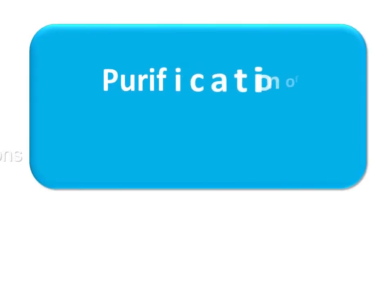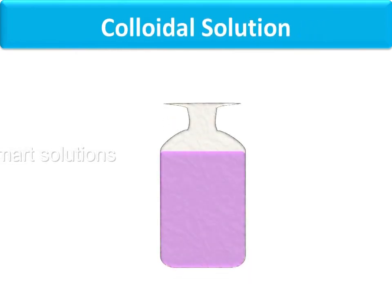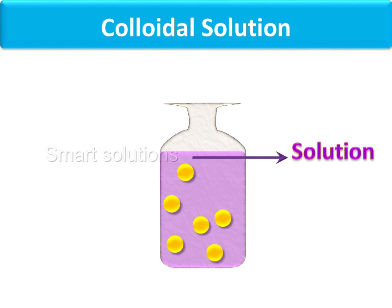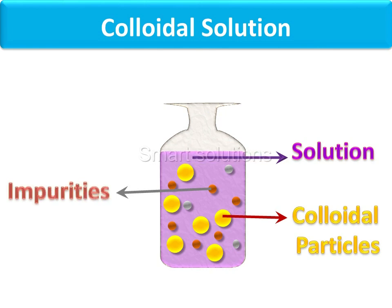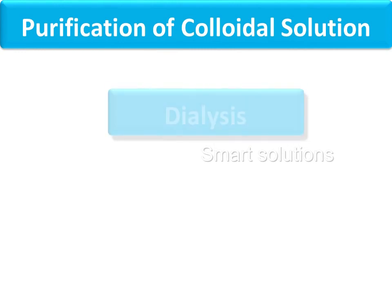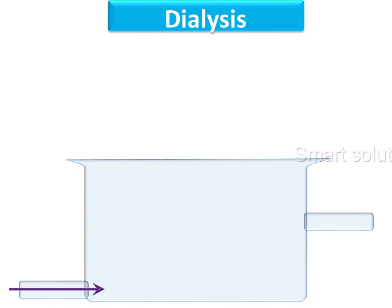Purification of Colloidal Solution. During the preparation of colloidal solution, excessive electrolytes and some other impurities remain in the colloidal solution. These impurities can be removed by dialysis, electrodialysis, and ultrafiltration. Here, impurities are removed by diffusion by using a suitable membrane.